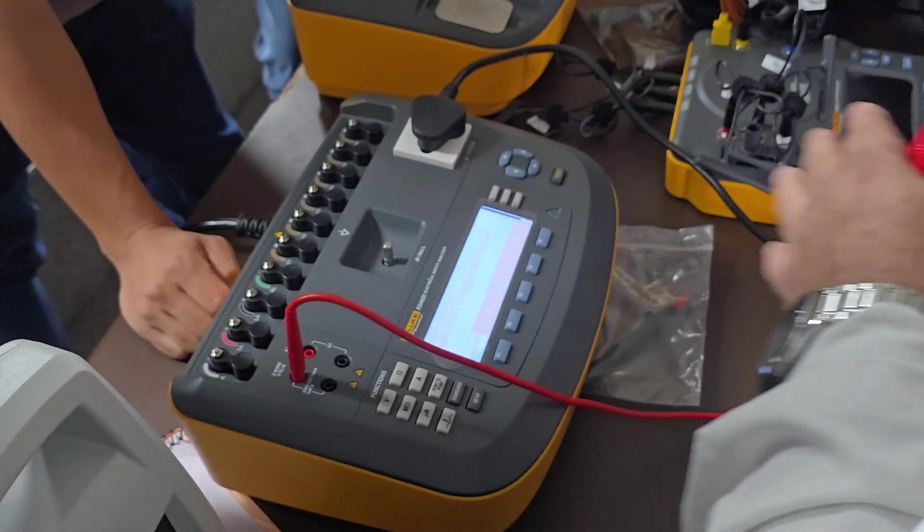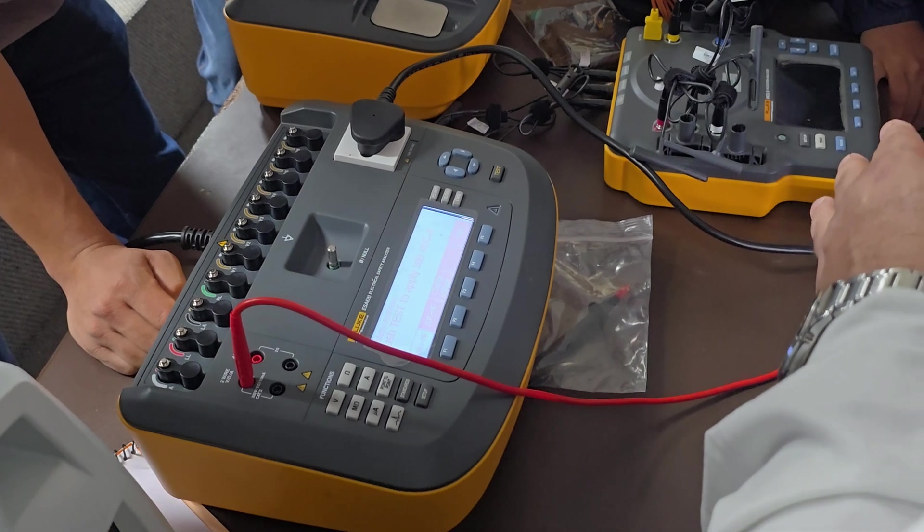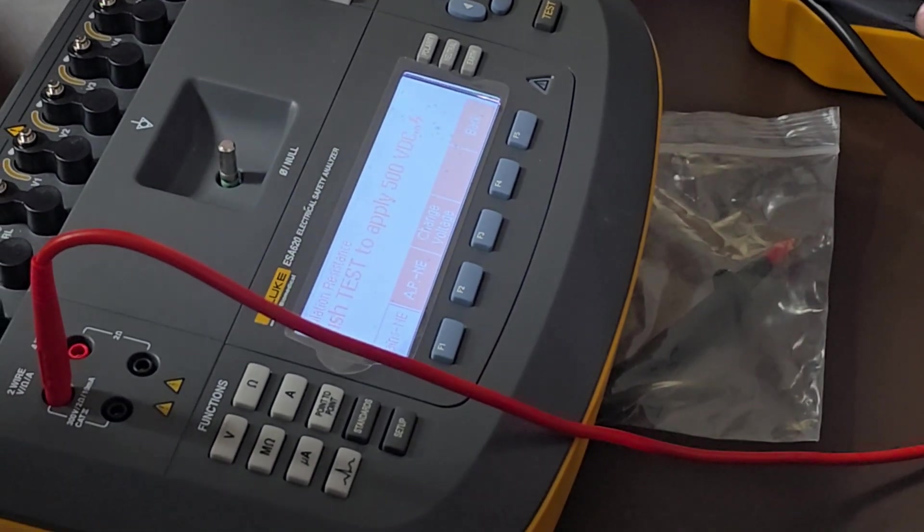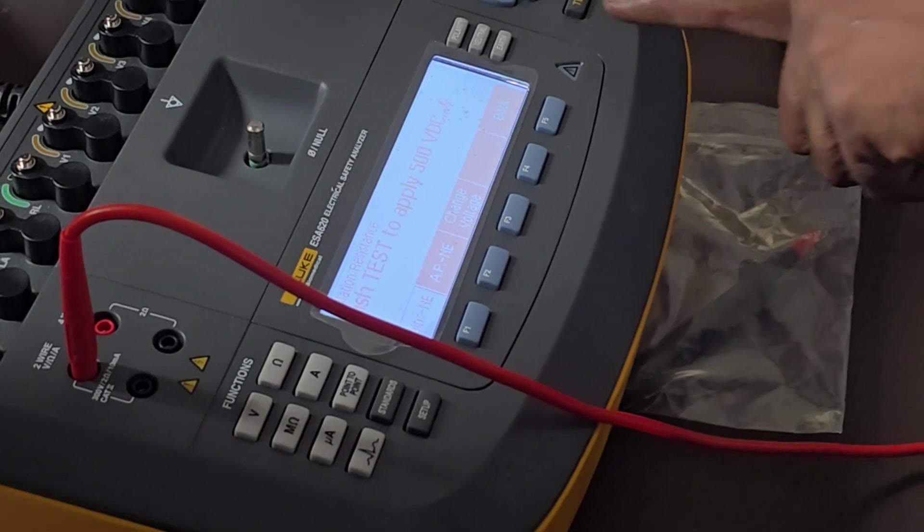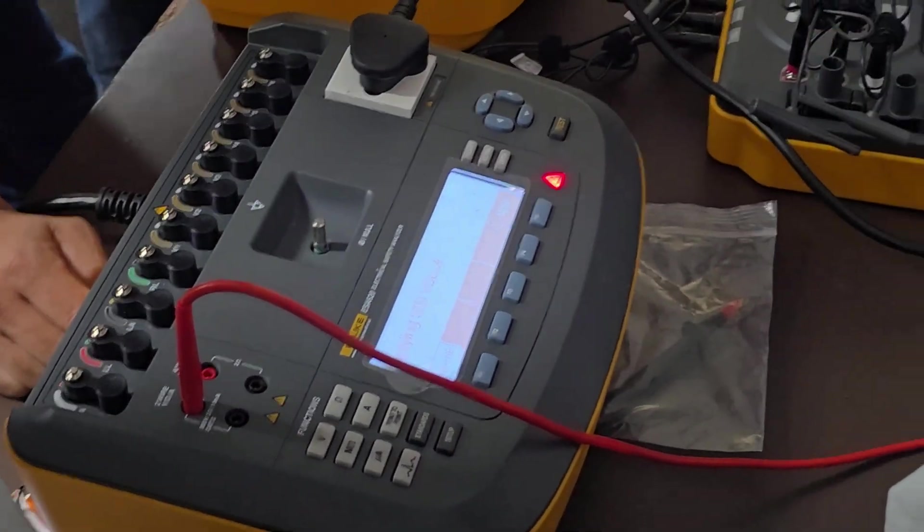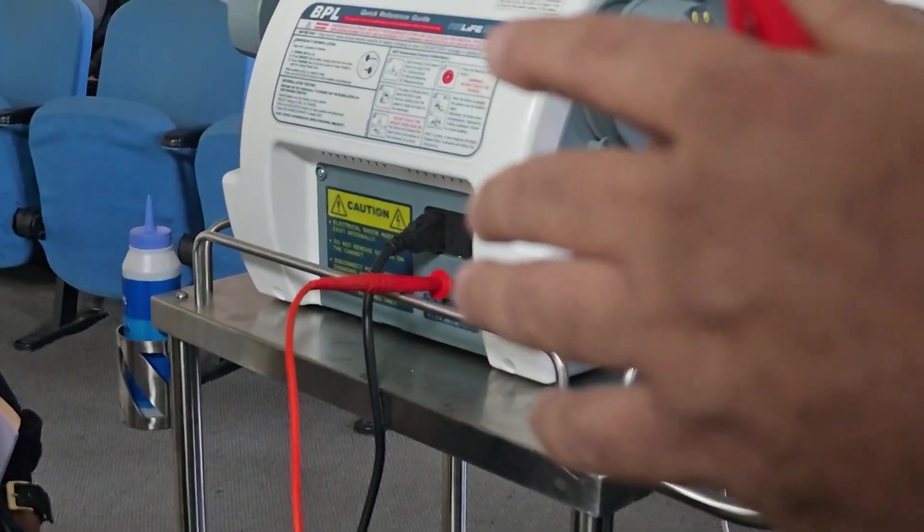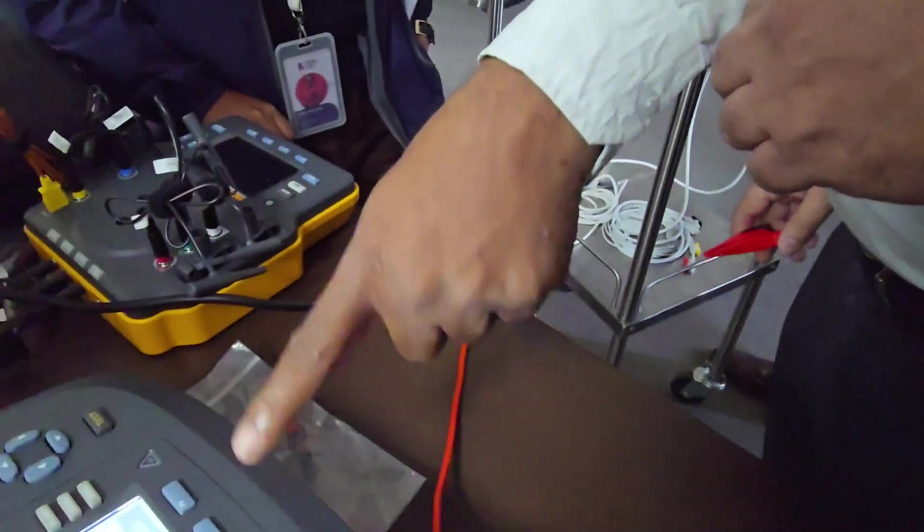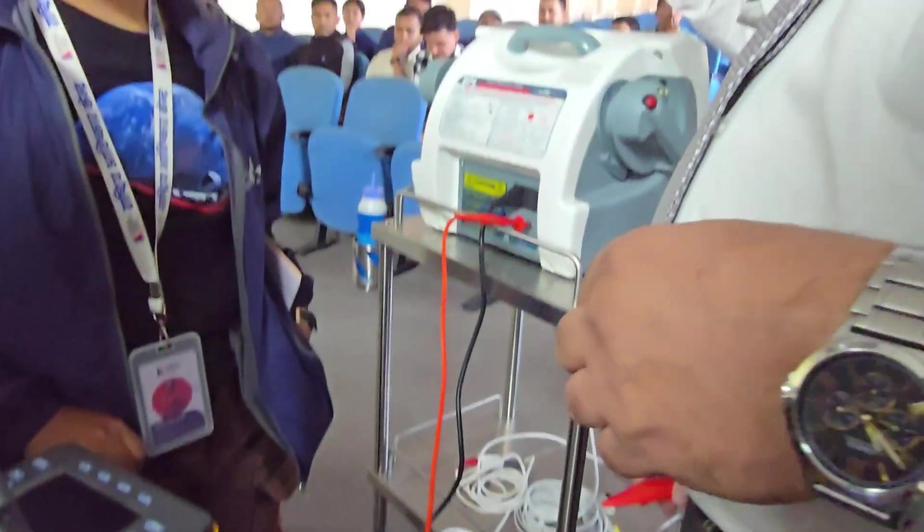This 500 volts, when I press start test, see, this light on, the current goes from this to this, to this. It is going here, 500 volts. And then it gives the reading.